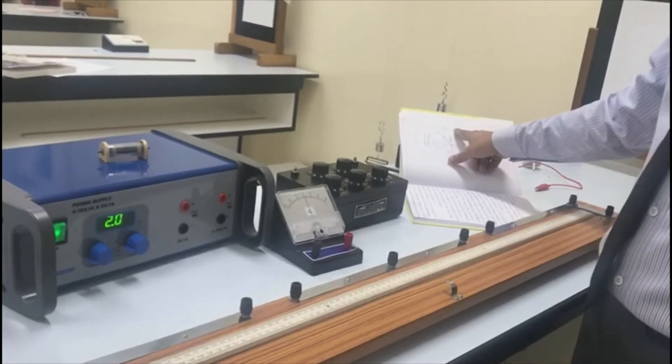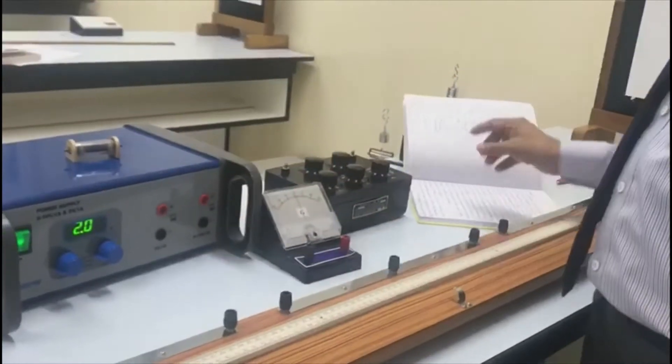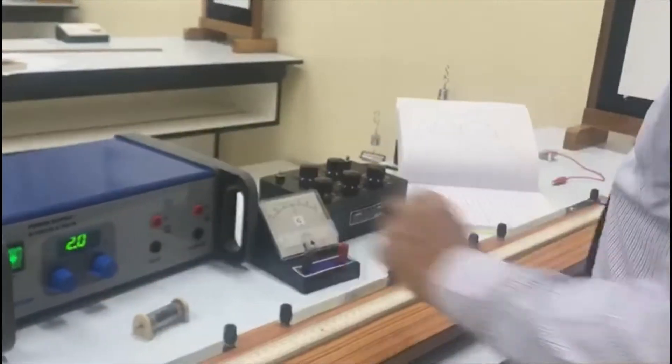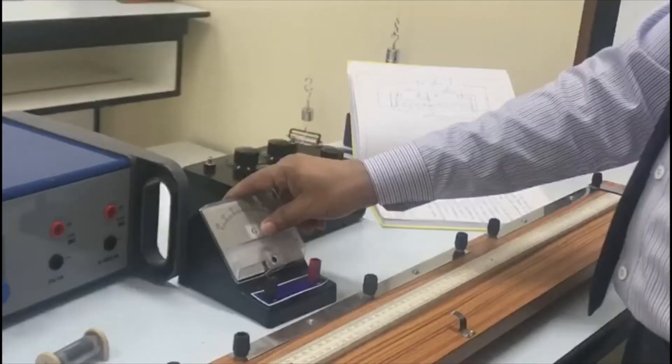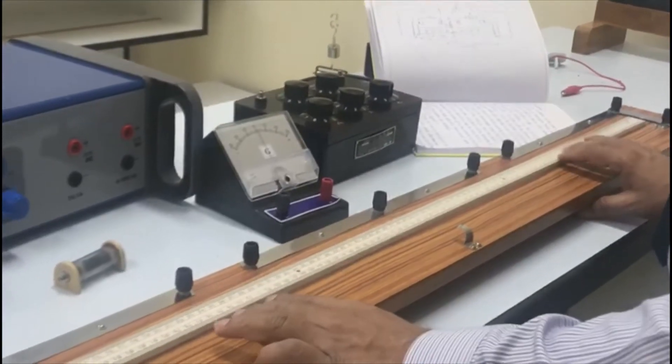If you don't have a rheostat, you don't normally connect the rheostat. So, cell, unknown resistance, galvanometer, known resistance box, meter bridge wire.